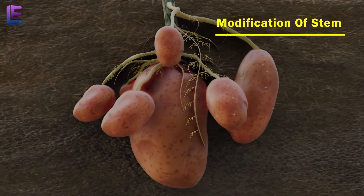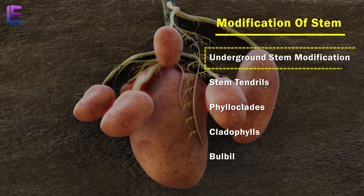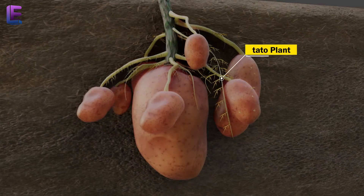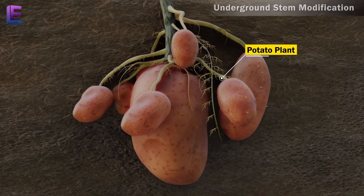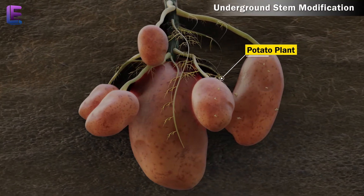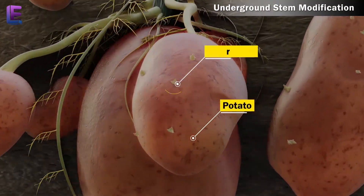Modifications of the stem. 1. Underground stem modifications: This helps to store food and take part in vegetative propagation. For example, potato is a stem tuber.